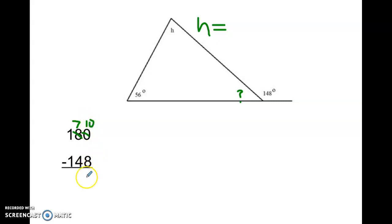So we have to do our borrowing. 10 minus 8 is 2, 7 minus 4 is 3, so that means this angle is 32 degrees. So now we go about just like we did on the other ones. We solve what we know: 56 plus 32 is 88.